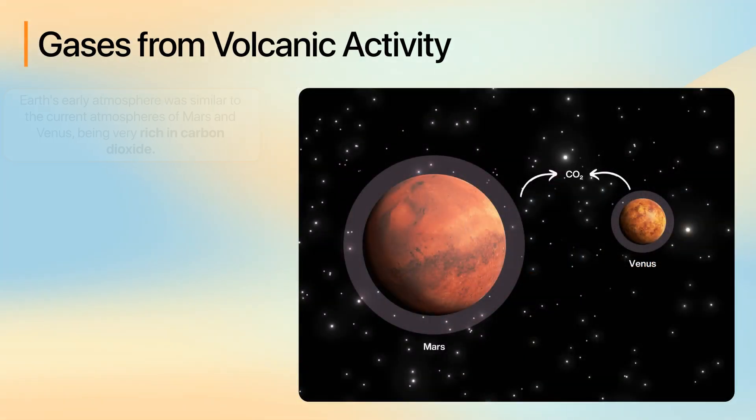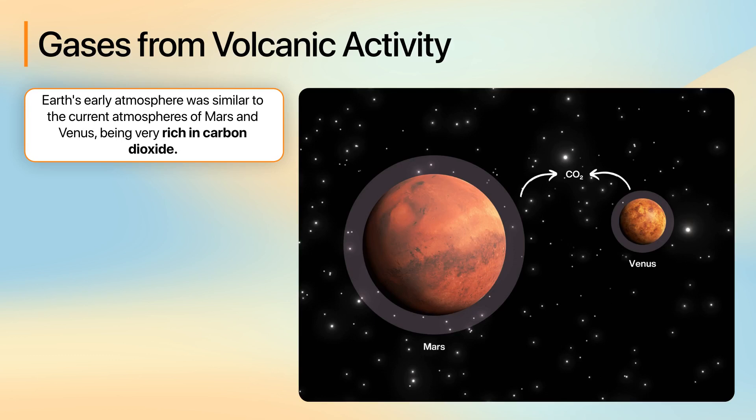A good way to imagine it is to think of the current atmospheres of Mars and Venus, both of which are rich in carbon dioxide. Similarly, Earth's early atmosphere is believed to have been mostly composed of carbon dioxide as well.